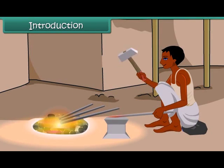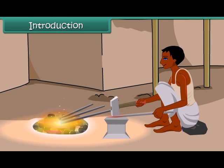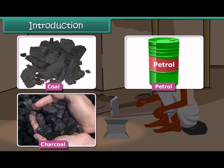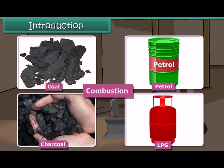The blacksmith burns coal to get hot iron which can be beaten to desired shape. A variety of fuels is used in daily life such as coal, petrol, charcoal, LPG, etc. Do you know which chemical process is taking place during the burning of these fuels? It is combustion.